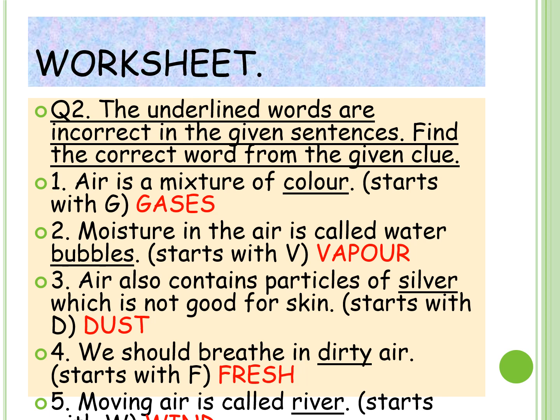Next: Moisture in the air is called water bubble — wrong. The correct answer is: moisture in the air is called water vapor. Third: Air also contains particles of silver which is not good for our skin — the clue starts with D. So the correct answer is: air also contains particles of dust, which is not good for skin. Fourth: We should breathe in dirty air — it starts with S. The correct answer is: we should breathe in fresh air. Fifth: Moving air is called river — starts with W. So moving air is called wind.